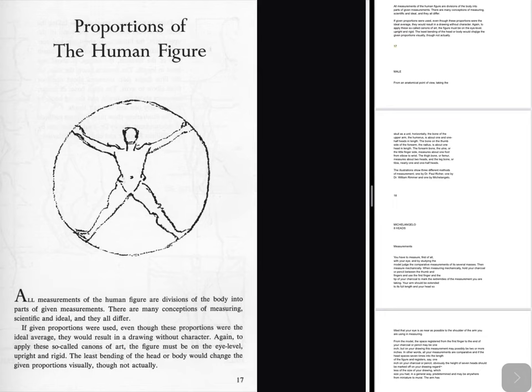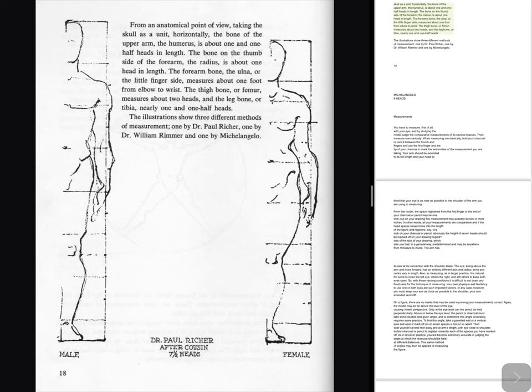Male from an anatomical point of view, taking the skull as a unit horizontally: the bone of the upper arm, the humerus, is about one and one-half heads in length. The bone on the thumb side of the forearm, the radius, is about one head in length. The forearm bone, the ulna, or the little finger side, measures about one foot from elbow to wrist. The thigh bone, or femur, measures about two heads, and the leg bone, or tibia, nearly one and one-half heads. The illustrations show three different methods of measurement: one by Dr. Paul Richard, one by Dr. William Rimmer and one by Michelangelo.